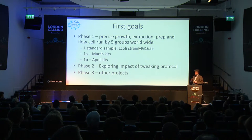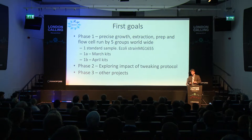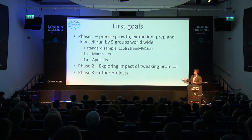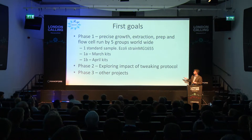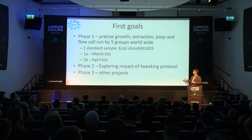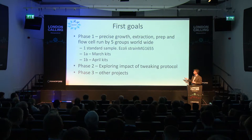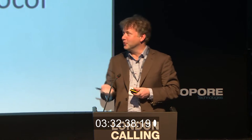We founded at the end of last year and formed over the last couple of months. The first set of experiments — called phase one — have happened across the consortium: a very precise growth, extraction, prep, and flow cell run by five groups worldwide. This is distributed by Justin O'Grady, who talked earlier. It's the E. coli strain K12 MG1655, and he actually has some vials of it on his person now.